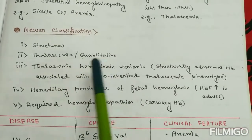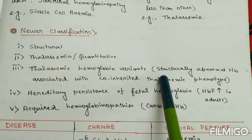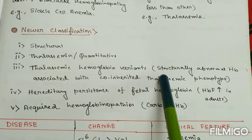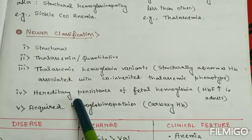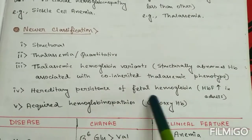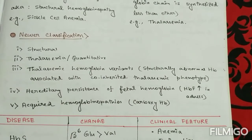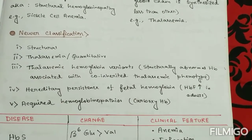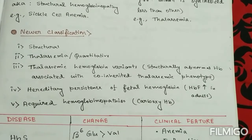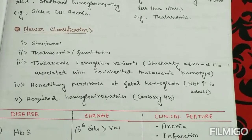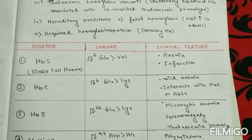The newer classification also includes thalassemic hemoglobin variants — that is, structurally abnormal hemoglobin associated with co-inherited thalassemic phenotype — hereditary persistence of fetal hemoglobin, where HbF is increased in adults, and acquired hemoglobinopathy such as carboxyhemoglobin.